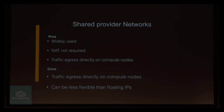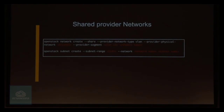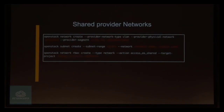A potential con is that traffic egresses directly on the compute nodes — depending on your network infrastructure, if you only have access to VLANs from the network nodes, this might not be possible. So whether it's a pro or con depends on your setup. It can also be a little less flexible than floating IPs; it's not as easy to reserve and assign specific IP addresses to specific resources. To set it up, you create a shared network, and if you want RBAC, the policy access is 'shared' instead of 'external'.